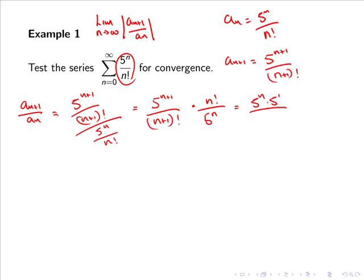And n+1 factorial is simply n+1 multiplied by n factorial. And this is all multiplied by n factorial over 5^n.